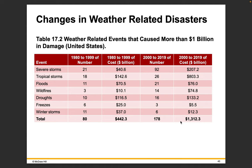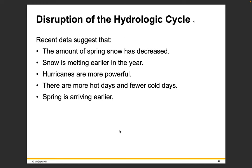There's a table of weather-related events that caused more than a billion dollars in damage just in the U.S. Comparing the period from 1980 to 1999 to the next 20-year period, the costs are significantly higher in the more recent period. Recent data also suggests that the amount of spring snow has decreased, snow is melting earlier in the year, hurricanes are more powerful, and there are more hot days and fewer cold days. Spring is arriving earlier in the U.S.